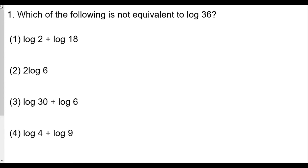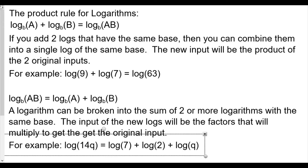We begin with number one: which of the following is not equivalent to log 36? For this situation, we'll be using the laws of logs. The first one is the product rule: log base b of a plus log base b of b equals log base b of ab.